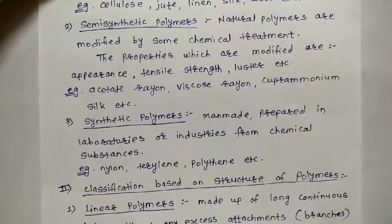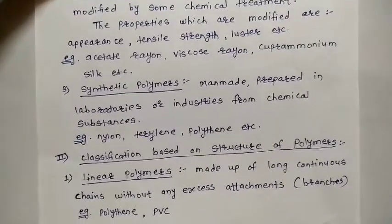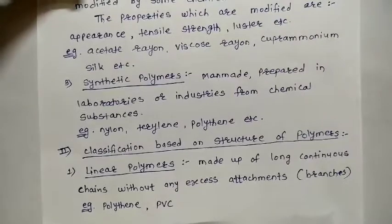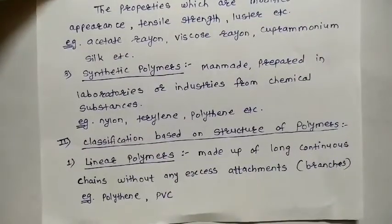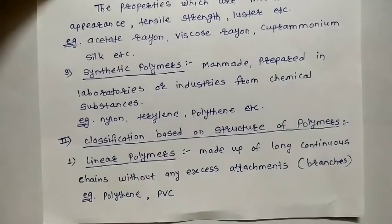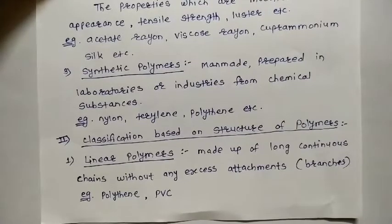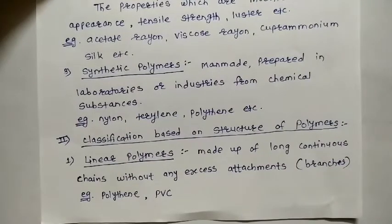Examples of synthetic polymers include nylon, nylon ropes, terylene, and polythene. The second classification is based on the structure of polymers — how it looks structurally, whether it is linear, cross-linked, or branched. Depending on structure, polymers are of three types. First are linear polymers, which are made up of long continuous chains without any branches or excess attachments.